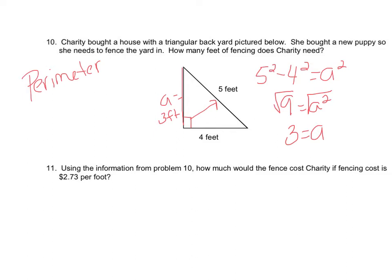That's a special 3-4-5 right triangle, so you didn't even need to do any work if you memorized it. Now we find the perimeter by adding all three sides: 3 plus 4 plus 5 equals 12 feet. Charity needs 12 feet of fencing for her yard.